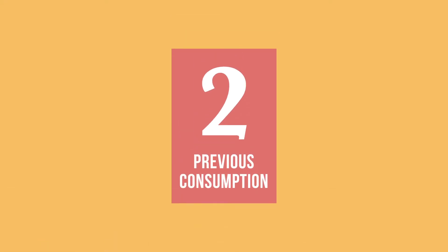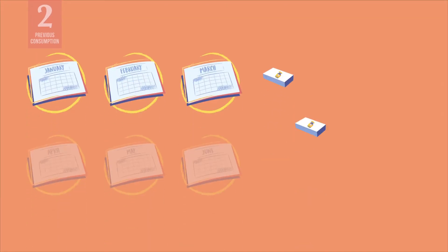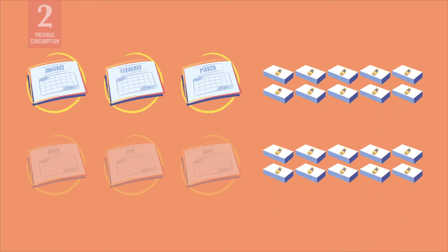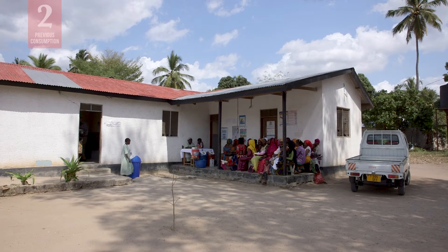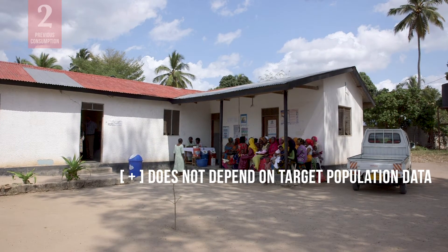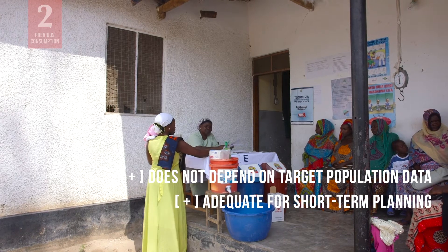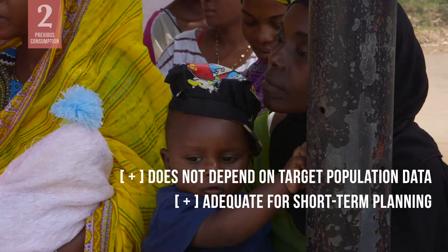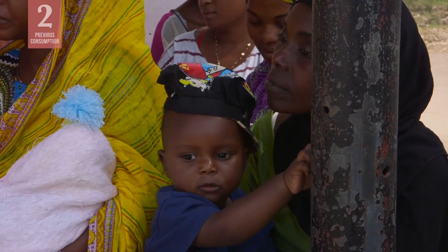A second method is to estimate by previous consumption. This method considers how much vaccine was used during a specific period of time; that number tells you how much vaccine to order for a future time period of the same length. An advantage of this method is that it does not depend on target population data. It can be used for both short or long-term planning, but it is best for short-term planning.